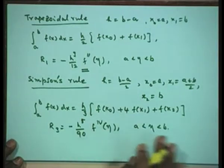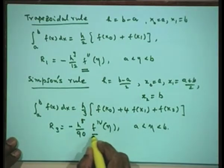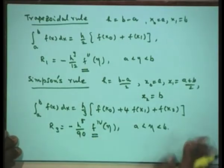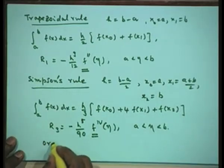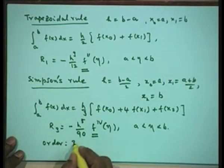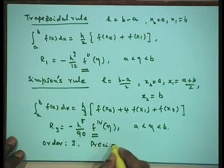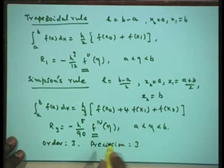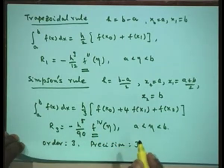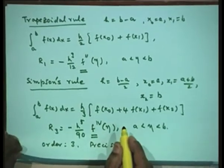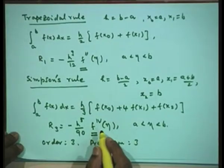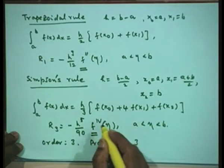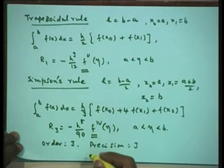From this we concluded that because the error term contains a fourth derivative, the order of Simpson's rule is three — also called precision three. Simpson's rule integrates exactly polynomials of degree less than or equal to three. This happened because the error constant turned out to be zero, and hence the order of the formula went from two to three.